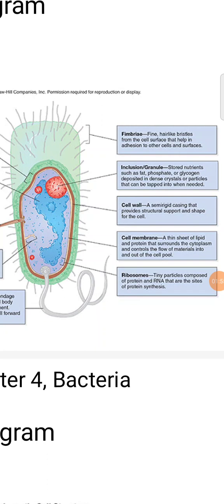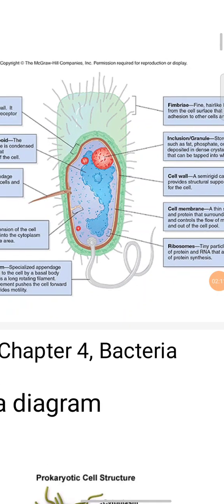The cell wall is responsible for the bacterial size and shape. Inclusion granules store nutrients such as fat, phosphate, glycogen, crystals, and other particles.